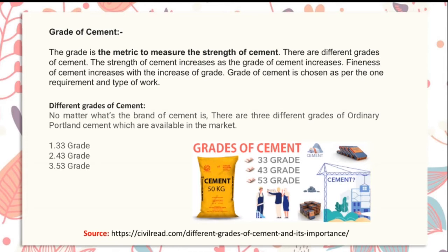Grade of cement: the grade is the metric used to measure the strength of cement. The strength of cement increases as the grade increases, and fineness of cement also increases with the grade. The grade of cement is chosen as per the requirement. There are mainly three grades of ordinary Portland cement available in the market: grade 33, grade 43, and grade 53.